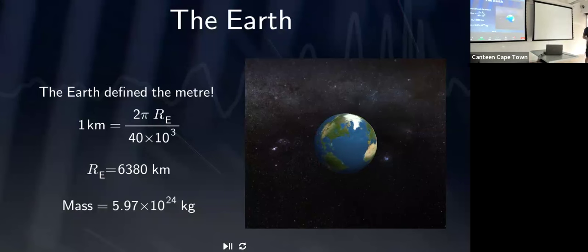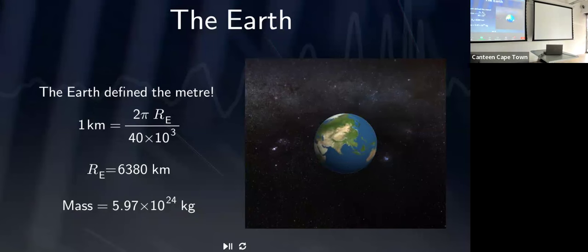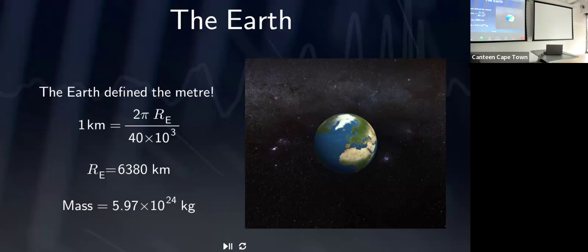The engine powering this talk is the same as what's going to drive that facility, and if you're interested in getting the software, let me know. We love and live on the Earth, and the Earth actually defined the meter — the French decided there should be 40 million meters from the North Pole to the South Pole and back again. This means the radius of the Earth is 40,000 kilometers divided by two pi.